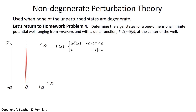Welcome to another video on interesting topics in quantum mechanics. Today we're talking about non-degenerate perturbation theory. Perturbation theory is typically treated by first looking at non-degenerate perturbation theory, then degenerate, and then time-dependent, and we will follow in that order, beginning with non-degenerate perturbation theory, which considers problems where there are no degenerate eigenstates in the unperturbed system.